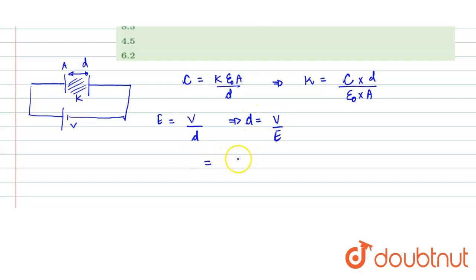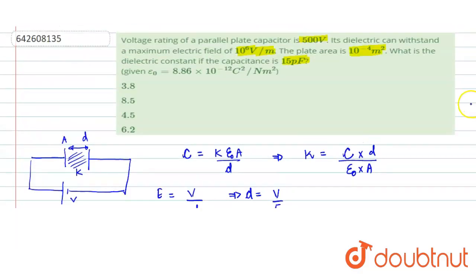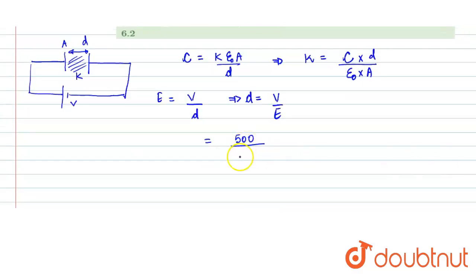Potential difference is 500 volt and the electric field is 10^6 volt per meter. So that becomes 500 × 10^-6 meter as the separation between the plates.